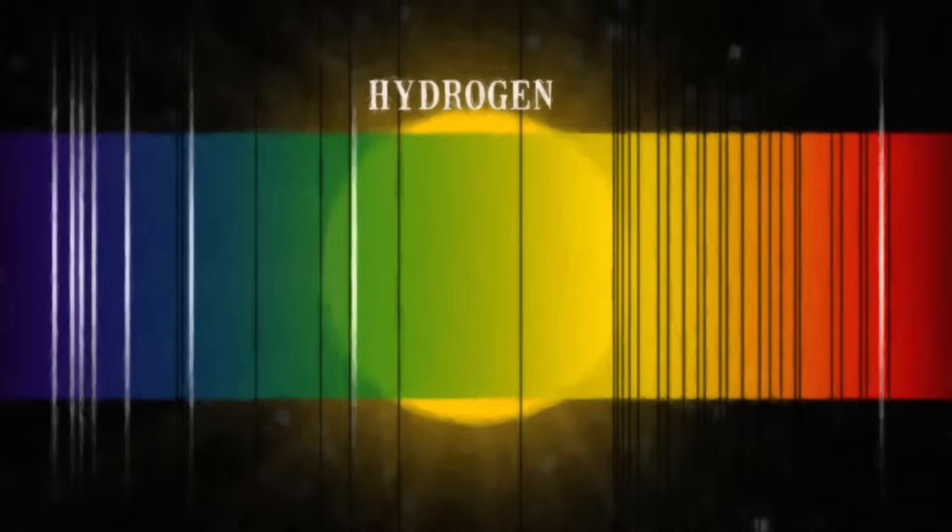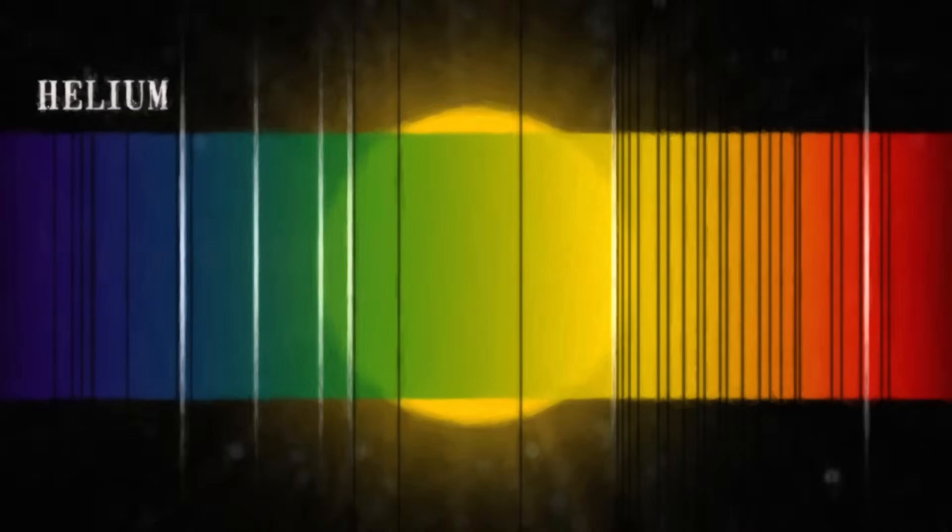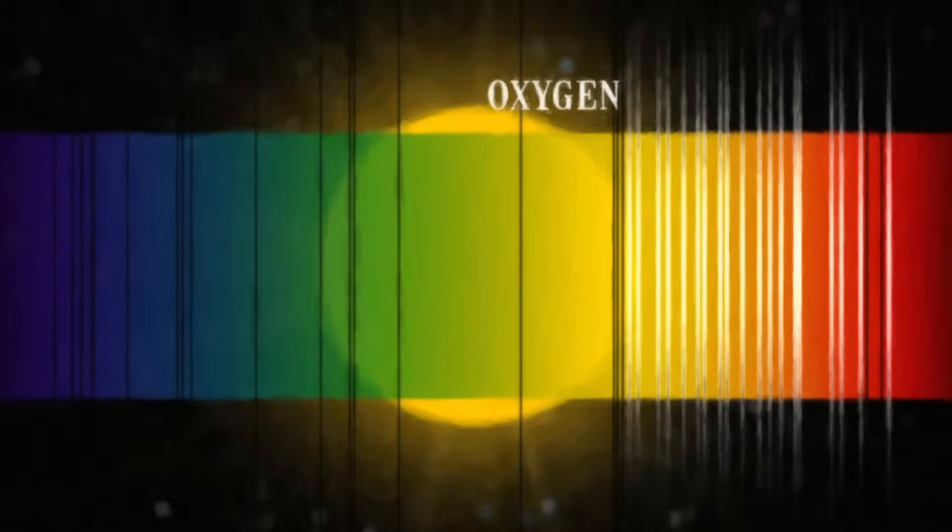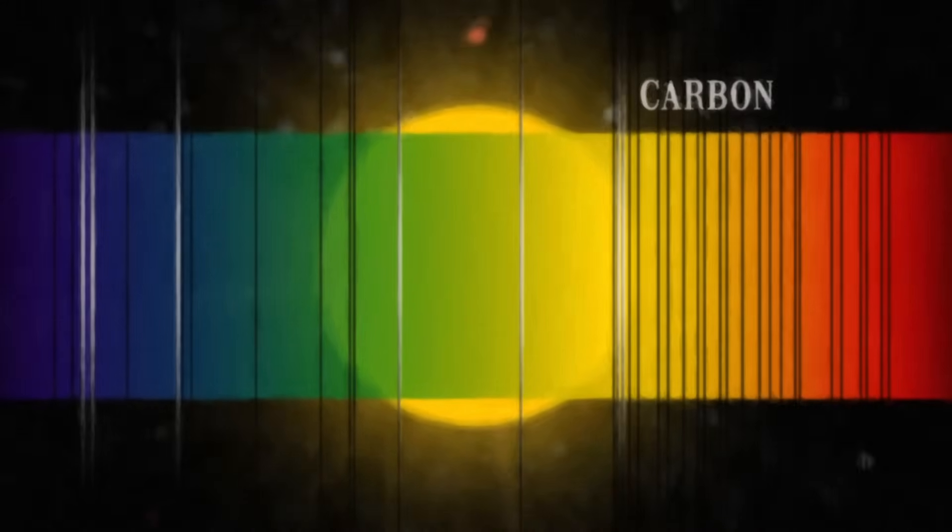When we look at the scattered light from our sun, we see something strange, dark lines in our rainbow. These lines are the characteristic fingerprints of atoms. Each type of atom in the solar atmosphere soaks up light at specific wavelengths, and the amount of absorption depends on how many of these atoms there are.